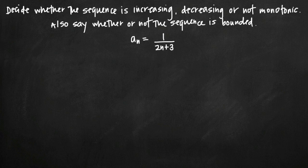Today we're going to be talking about how to decide whether a sequence is increasing, decreasing, or not monotonic. We're also going to be talking about how to determine whether or not a sequence is bounded. In this particular problem, we've been given the sequence a sub n is equal to 1 divided by the quantity 2n plus 3.